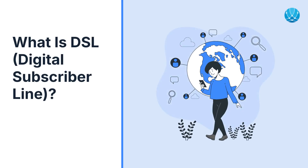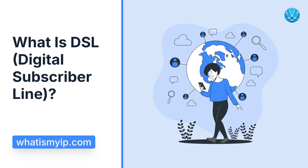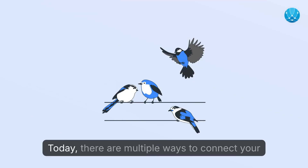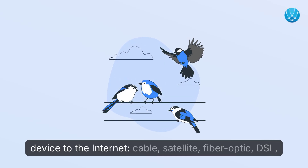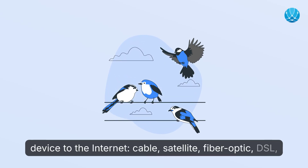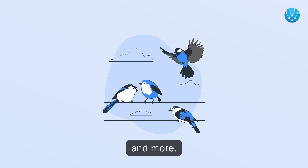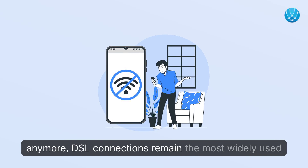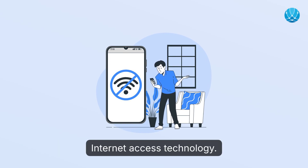What is DSL? Digital Subscriber Line. Today, there are multiple ways to connect your device to the internet: cable, satellite, fiber optic, DSL, and more. Although it may not be the fastest choice anymore, DSL connections remain the most widely used internet access technology.